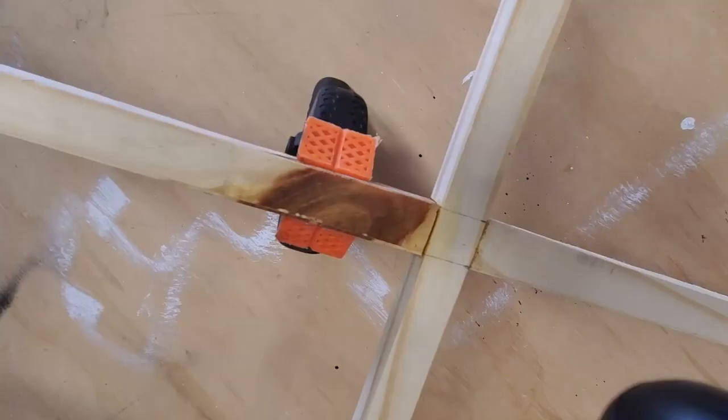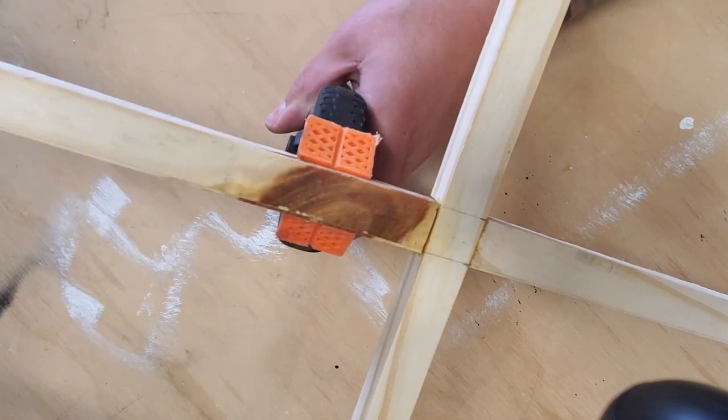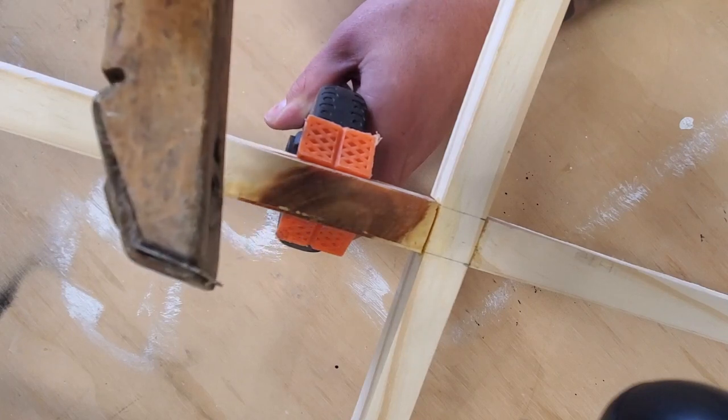I found this old tool in my grandmother's wood shop. I'm not sure how old it is, but it works perfectly for scraping semi-dry glue off of your glue-ups.